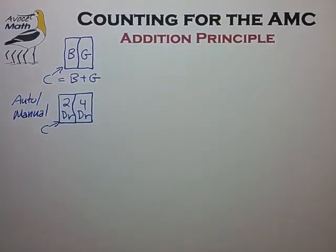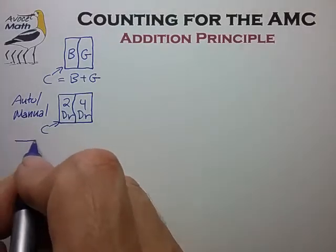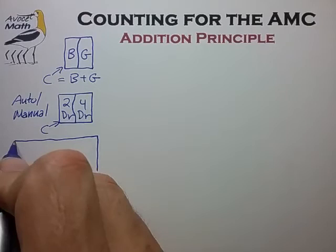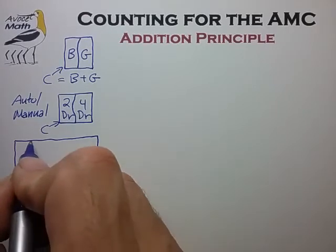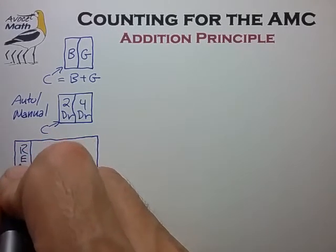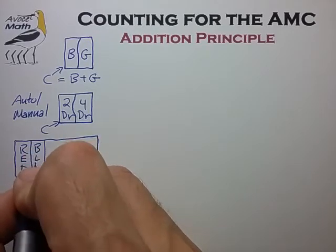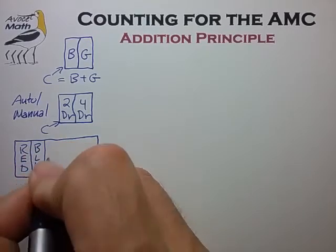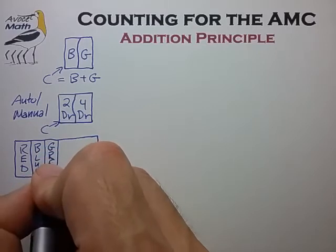Another possibility is to divide our car lot into multiple subsets based on color — for example, red cars, blue cars, gray cars, and so on.